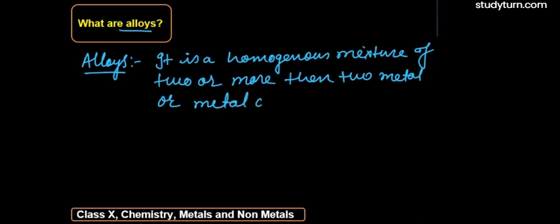या तो दो या दो से ज़्यादा metal को combine कर ले homogenously, या फिर दो या दो से ज़्यादा metal और non-metal को combine कर ले. तो उसको हम क्या बोलते हैं? Alloy बोलते हैं. अगर हम example के बारे में बात करें,